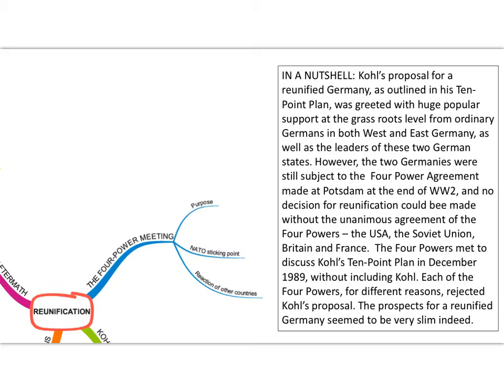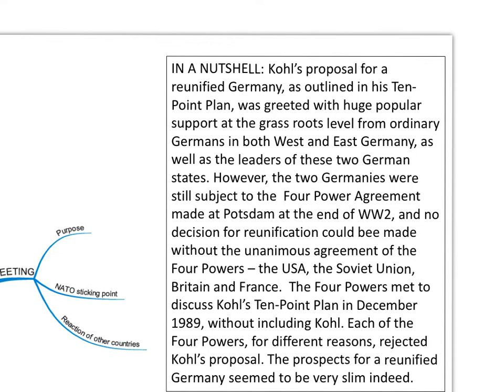In a nutshell: Kohl's proposal for a reunified Germany — originally outlined in his ten-point plan published in December 1989 immediately after the fall of the Berlin Wall — was greeted with huge popular support at the grassroots level, meaning ordinary Germans in both West and East Germany, as well as the leaders of the two German states.